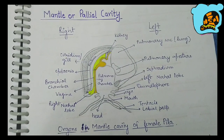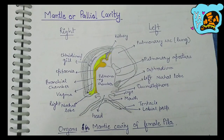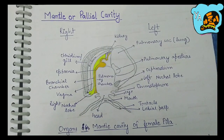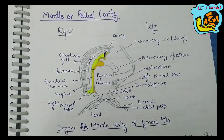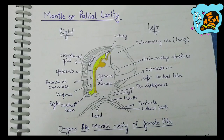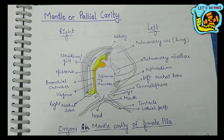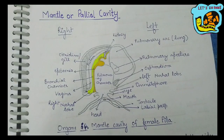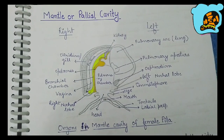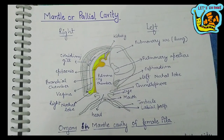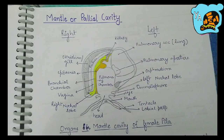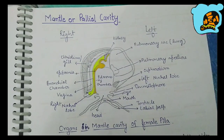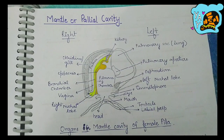Before studying each and every organ present in the mantle cavity, we need to be clear about two terms: the floor and the roof. Roof and floor are the two positions where the organs of the mantle cavity are present. The roof constitutes most of the organs of the Pila, and they are formed by the anterior free part of the mantle.